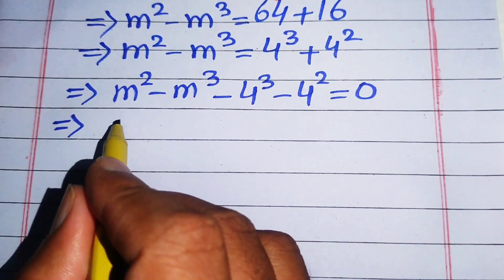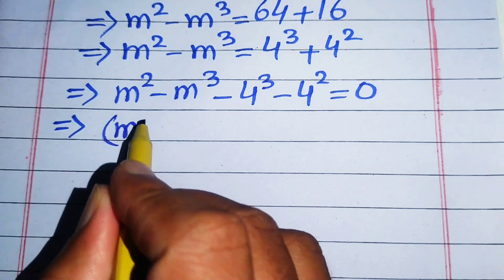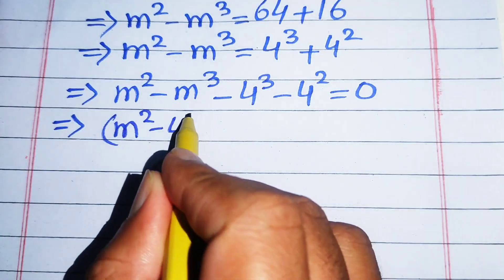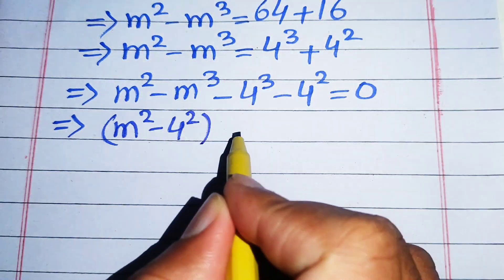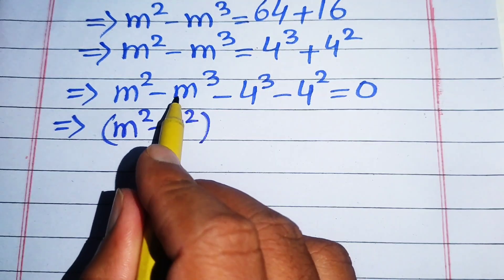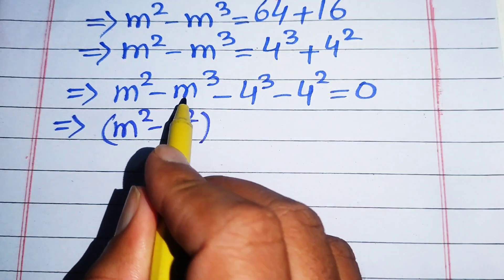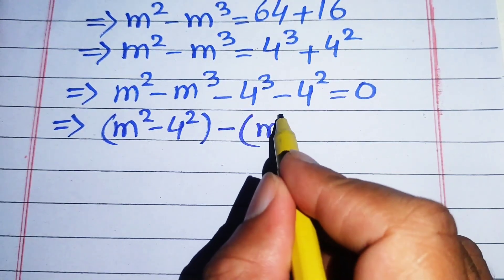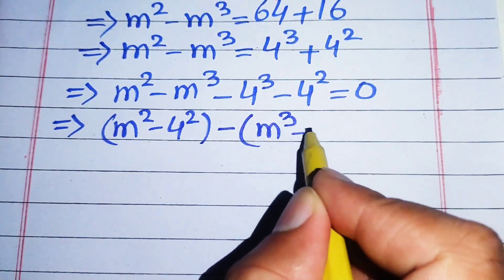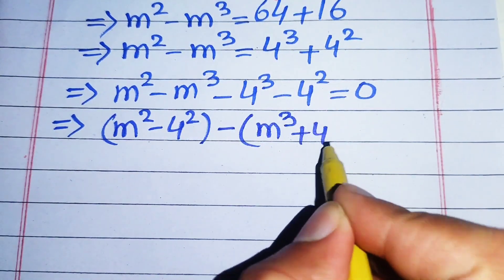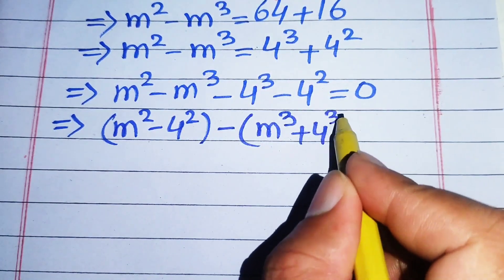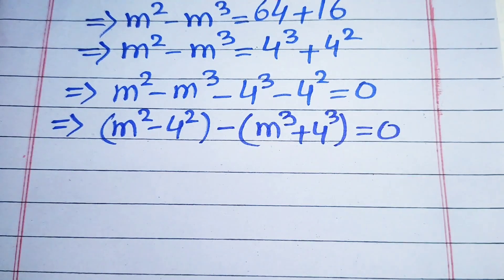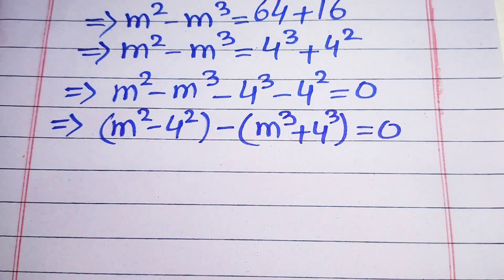After making the pairs, it is written as m squared minus 4 squared, and we take a common minus from the two cubic terms, giving minus of m cubed plus 4 cubed. This whole equation equals 0.